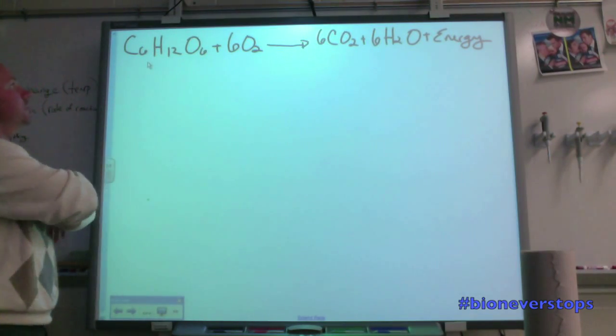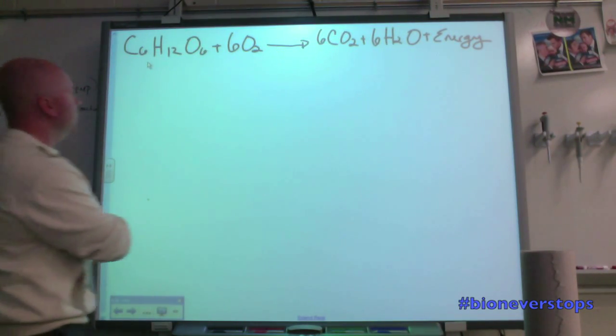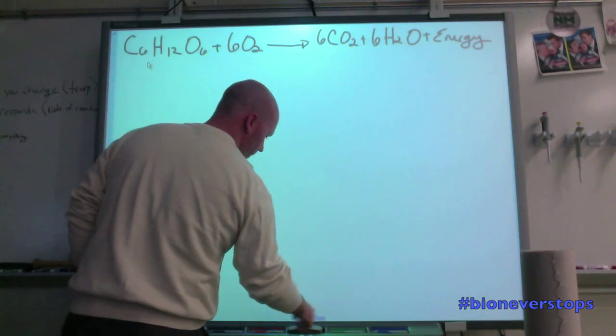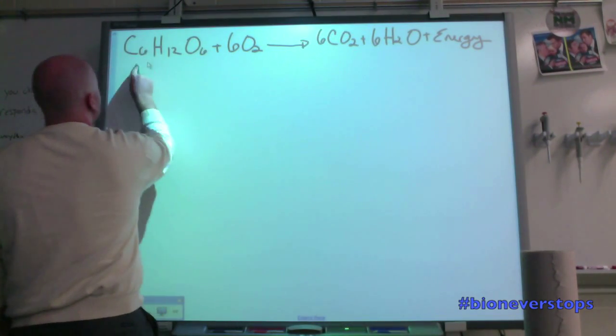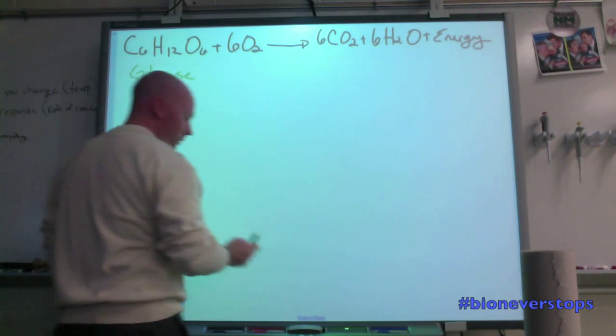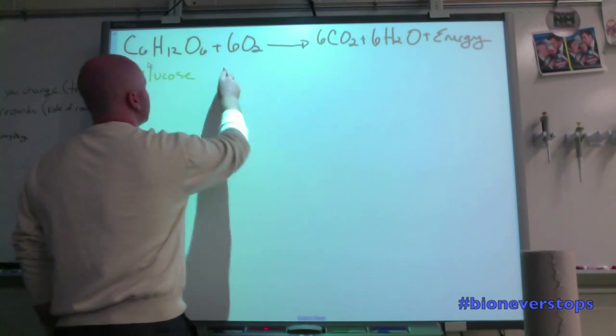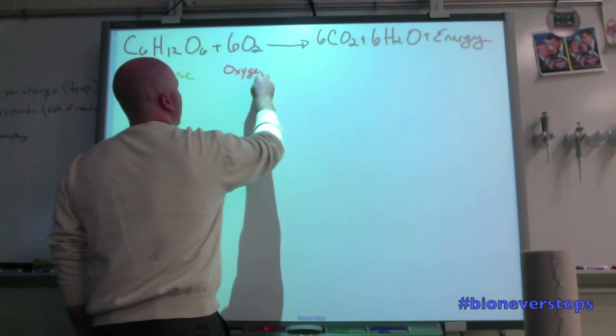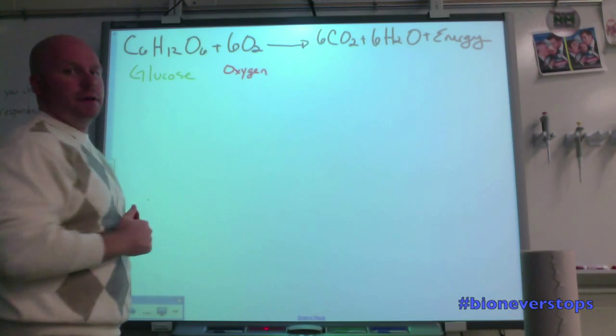So what I have written on the board is the equation for cellular respiration. The first part is C6H12O6, which is glucose. Then we have 6O2, which is oxygen. So these are our two reactants in the process.